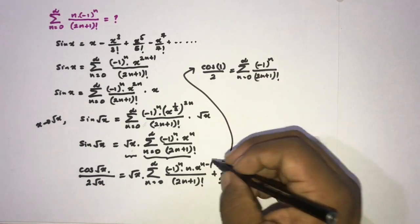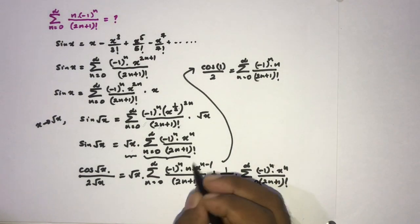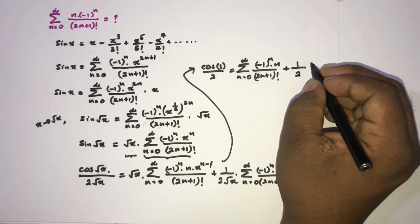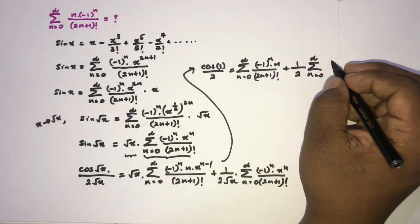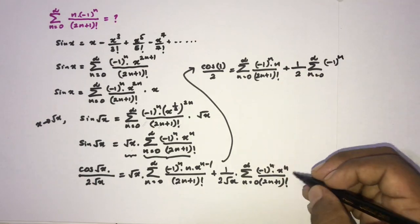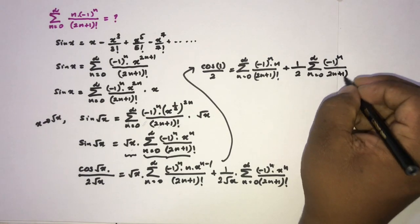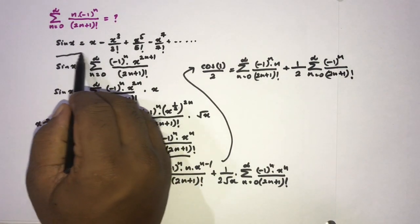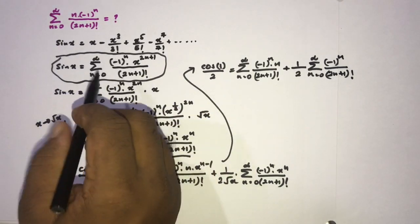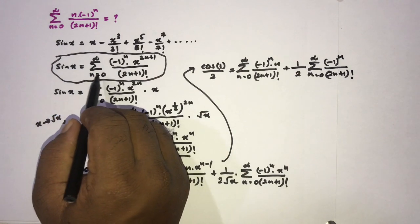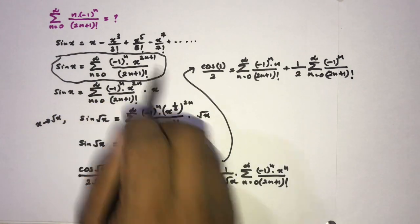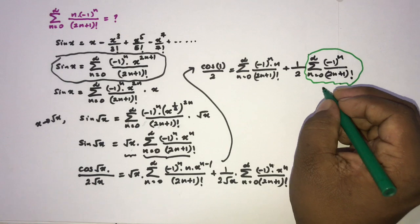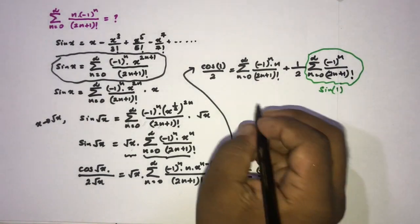At x equals 1, the terms with n in the numerator give the sum of (-1)^n times n over (2n+1) factorial, plus 1 over 2 times the sum from zero to infinity of (-1)^n over (2n+1) factorial. We recognize from the Taylor series of sine that the sum from zero to infinity of (-1)^n over (2n+1) factorial evaluated at x equals 1 is equal to sin(1).